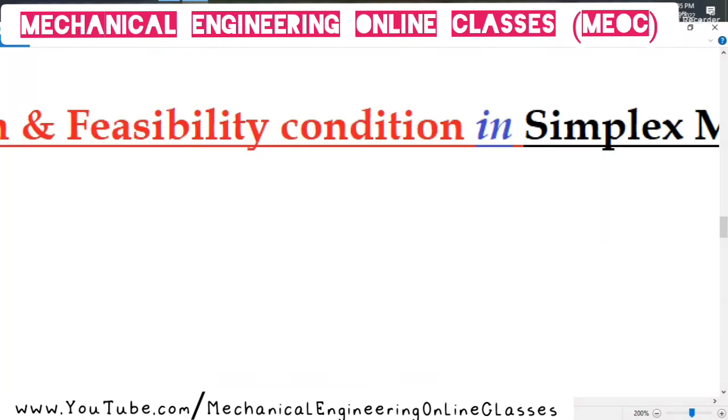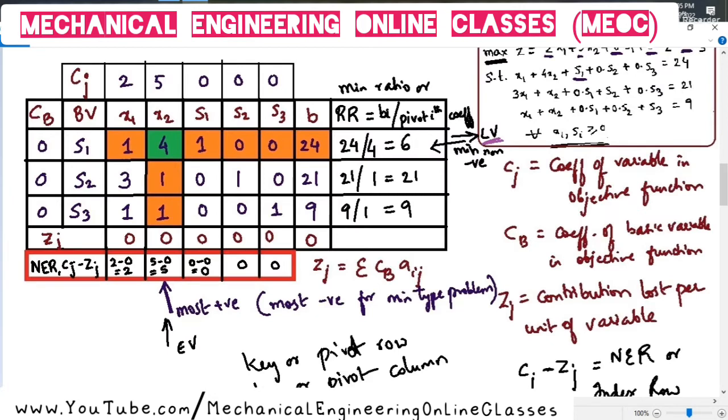Now, let us see what is called as a feasibility condition. Whether the objective function is of maximization type or a minimization type, leaving variable is the basic variable which is associated with the smallest non-negative ratio. Strictly with a positive denominator, what we are seeing here is a minimum ratio or replacement ratio RR. We have found replacement ratios for S1, S2 and S3. This is for the first table in our previous problem.